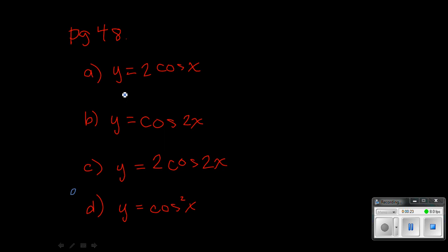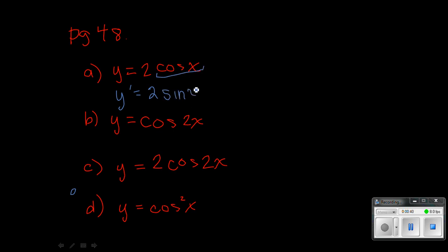So letter A — in the book it's y equals 2 sine x, but we're going to use 2 cosine x, just so it's really similar. So we want to take the derivative of that. This 2 just goes out front, nothing happens to it. And then all we need to worry about is the cosine x. So the derivative of cosine x would be negative sine x. I'm going to put the negative in front.